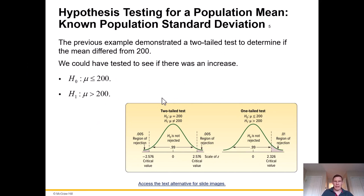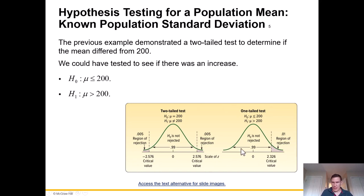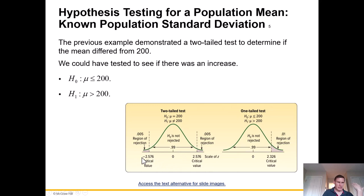The previous example demonstrated a two-tailed test. We could also test for just an increase — in that case, the null hypothesis would be mean less than or equal to 200, and H-sub-1 would be mean greater than 200. That would be a one-tailed test on the right side. If testing for a decrease, it would be one-tailed on the left. The two-tailed test represents an inequality where the mean could be either greater than or less than the hypothesized value.